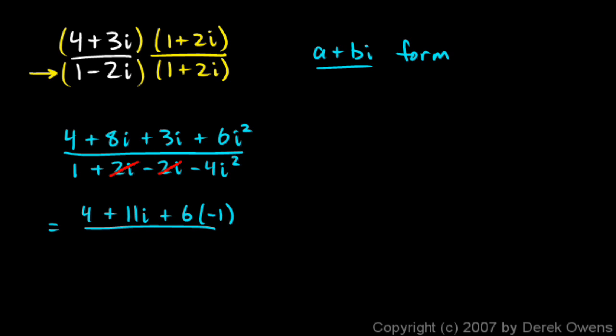And then on the bottom, I just have 1 minus 4 times negative 1, which is just going to be 1 plus 4. So let's work with this just a little bit more. Up top, this 6 times negative 1 is negative 6. And that can be combined with the 4. So I have 4 minus 6. That gives me negative 2 plus 11i. And then on the bottom, I have 1 plus 4, which is just 5.